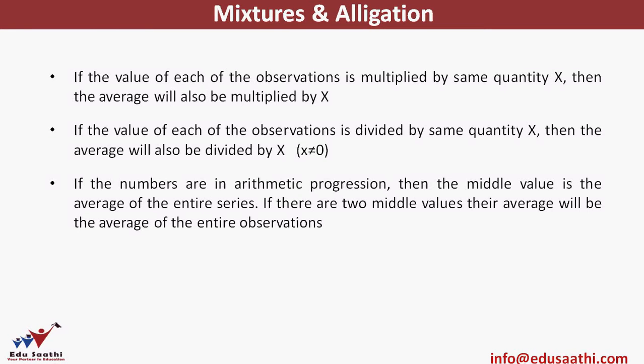If the numbers given are in arithmetic progression — a progression whose observations differ by a constant difference — then the middle value of the arithmetic progression is the average of the entire series. If there is one middle value, that value is the simple average or mean. If there are two middle values, then the average of those two middle values is treated as the average of the entire observations.